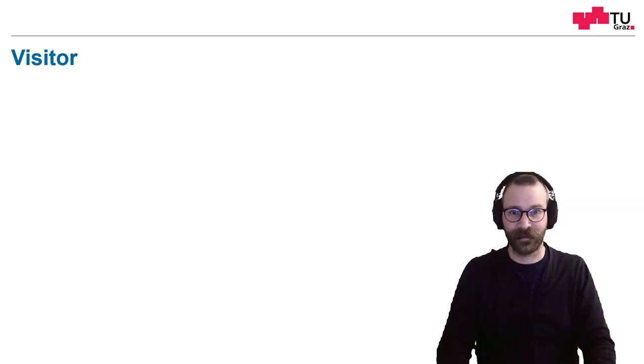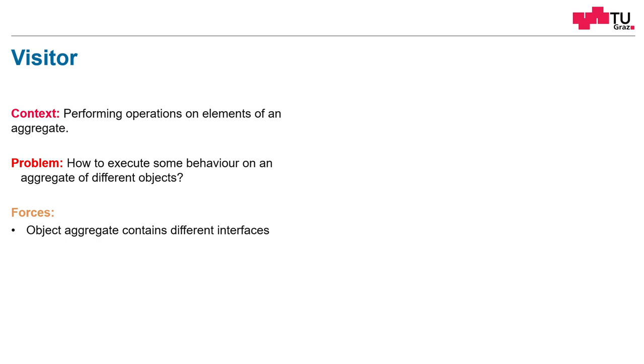Let's talk about the properties of the visitor now. The context is we perform operations on elements of an aggregate. This can also be different types. The problem is, how can we react to different types? And how can we execute some additional behavior on these different types? We don't want to change the objects themselves. Maybe we cannot change them. But anyways, we want to add some behavior and we want to distinguish between the object types. The forces are that in our list, there can be different types or interfaces contained. We want to avoid polluting the classes with unrelated operations. We don't want to add a function for every additional purpose in the original object. Maybe we cannot add these functions because we cannot change the objects. One important thing is here, we know the types. So the types are relatively stable. There are seldom new types.